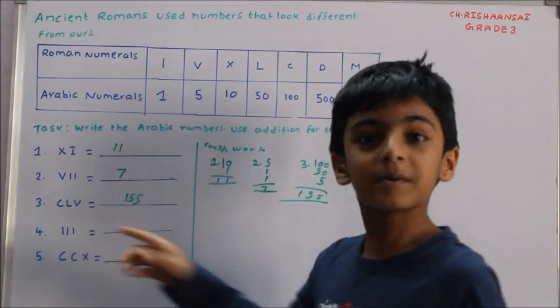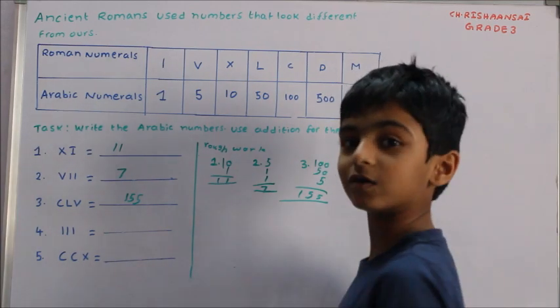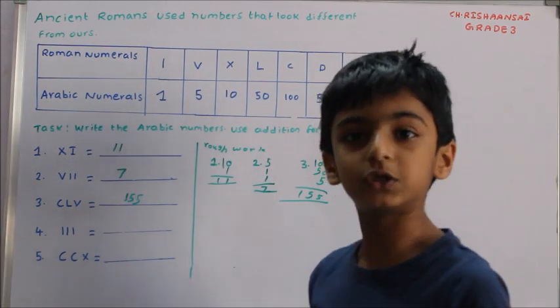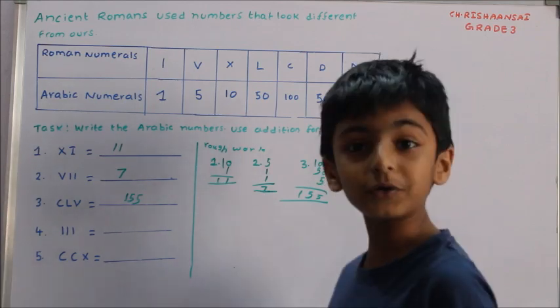III — I, I, I becomes 3, because 1 plus 1 is 2, and 2 plus 1 is 3.